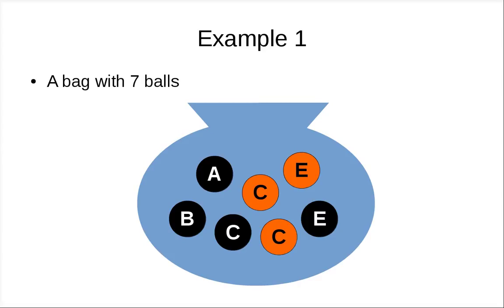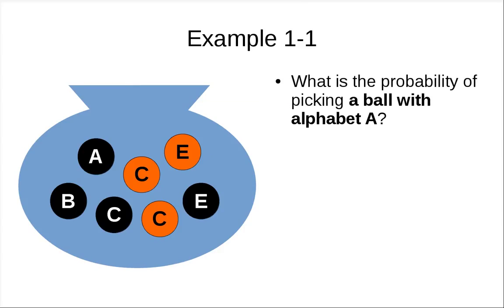Let's look at an example. In this example, we have a bag with seven balls, and each ball is either black or orange, and each ball has an alphabet on it. What is the probability of picking a ball with alphabet A? We have only one ball with alphabet A, so the probability that we are going to get this ball is one over seven.